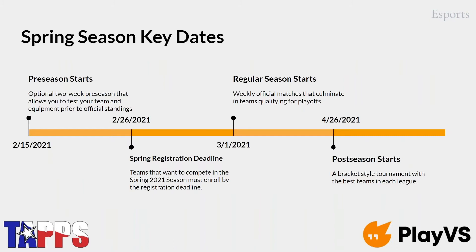From the TAPS side, we put together a competition that happens twice a year — once in the fall and once in the spring. The fall typically starts around October and goes until the end of the calendar year. The spring season, coming up next month, will start around February 15th. We'll have a two-week preseason, then an eight-week regular season with weekly matches against opposing teams, tracking wins and losses and standings. Once the regular season ends, we'll have playoffs and crown a TAPS champion.